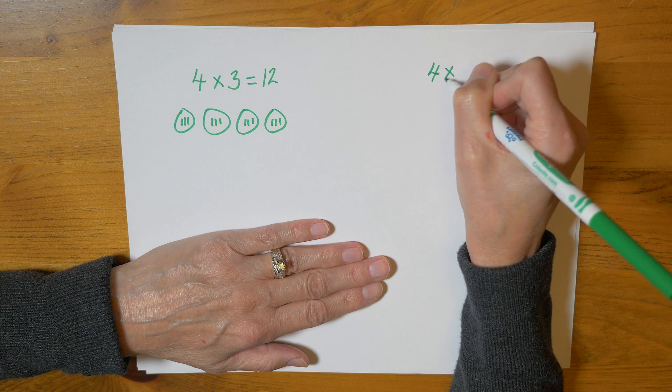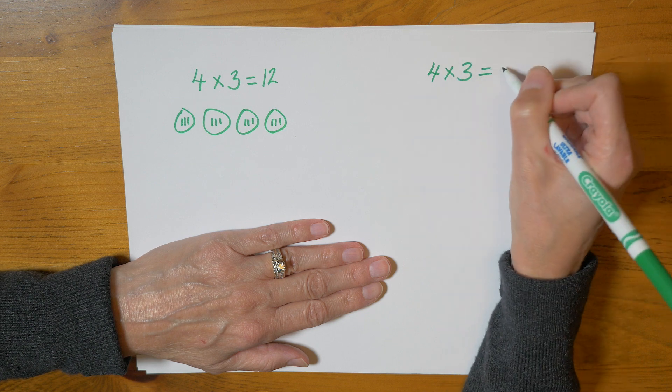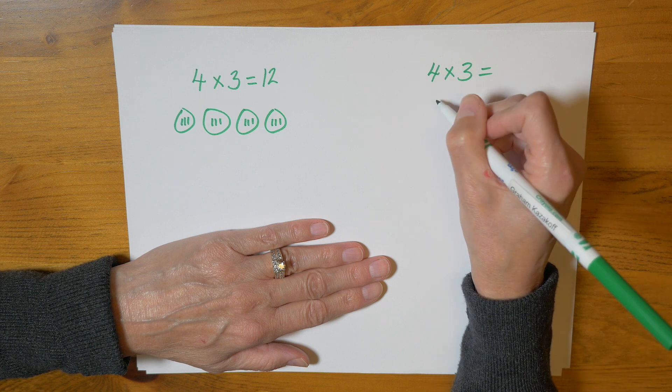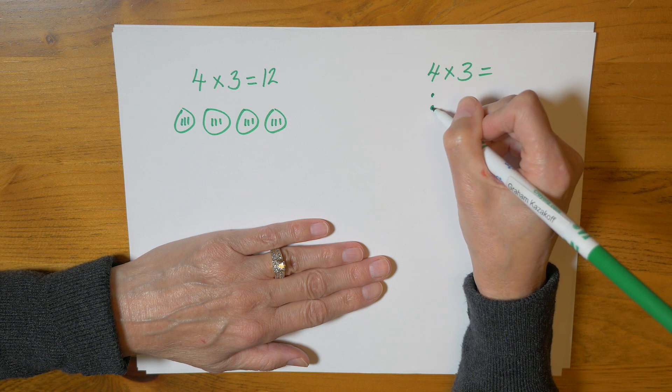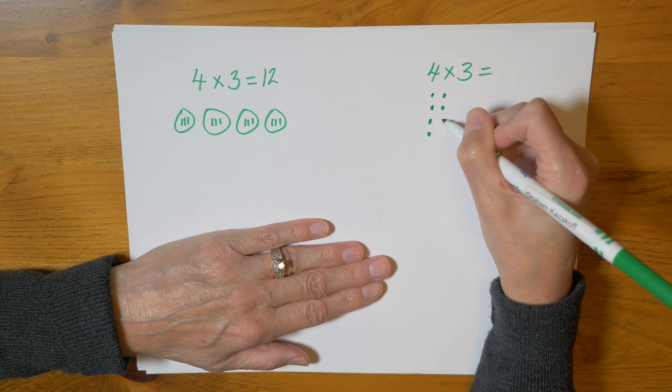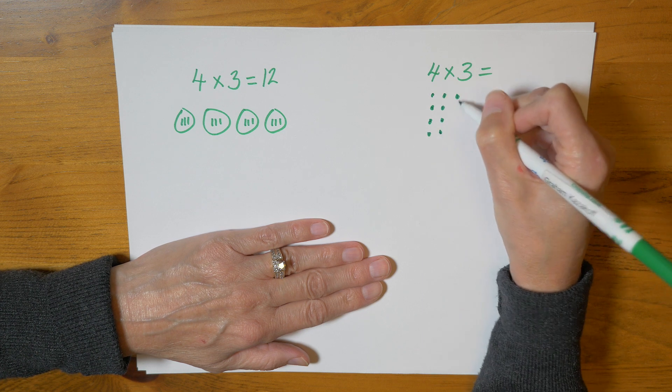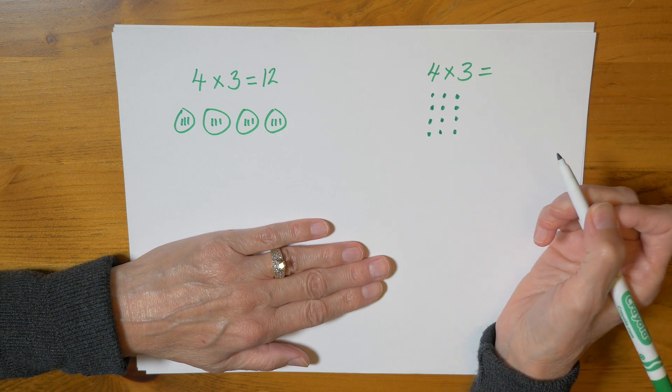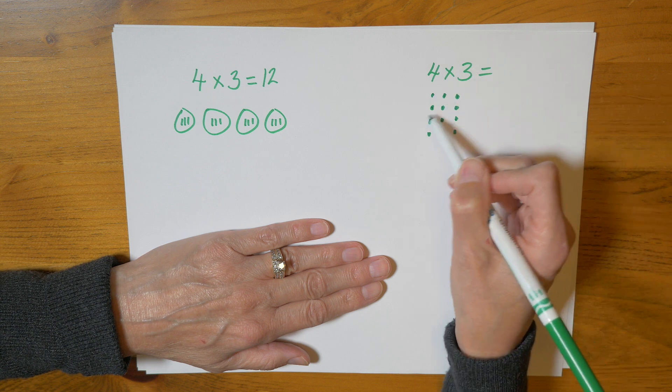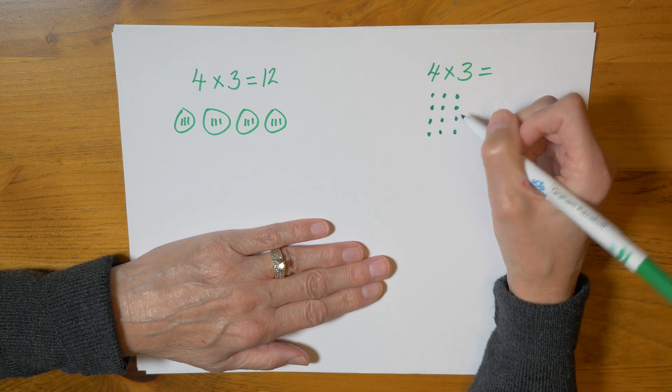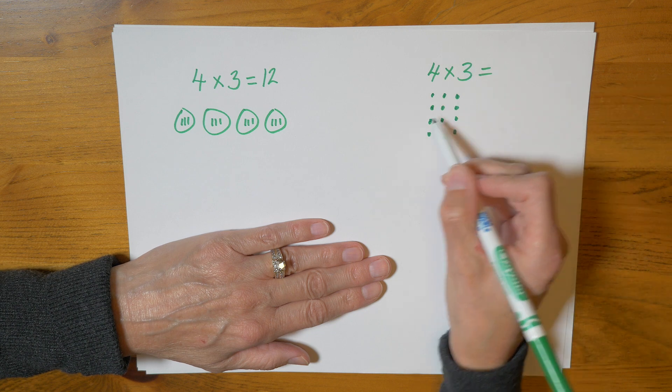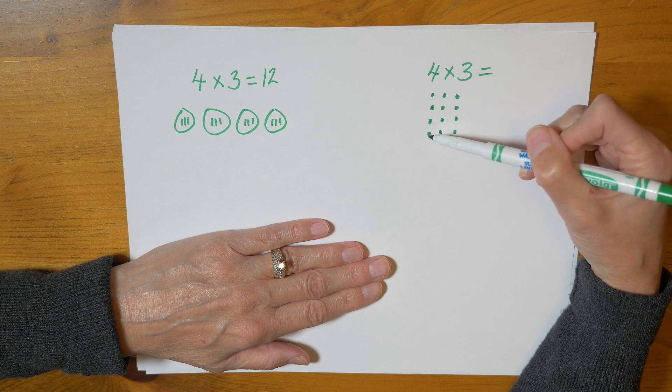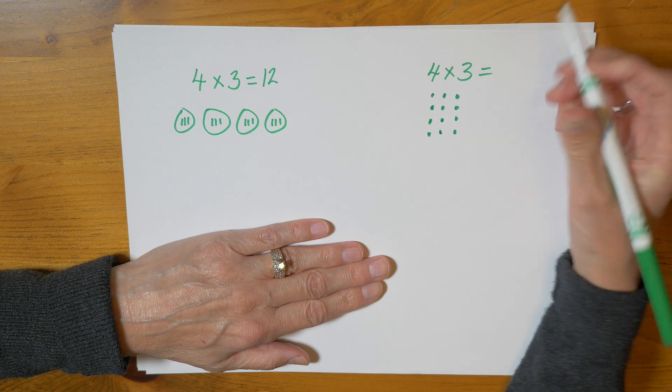So again let's try four times three just so that we can compare what it looks like. So I'm going to make four rows and there's three in each row. So we would have three, six, nine, twelve or we can count it this way. Four, eight, twelve.